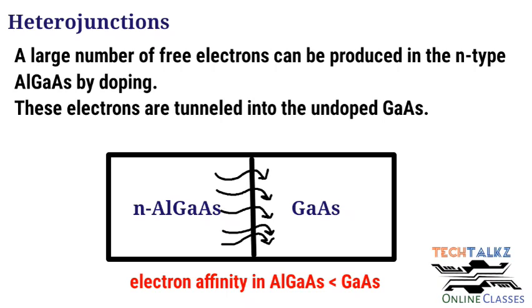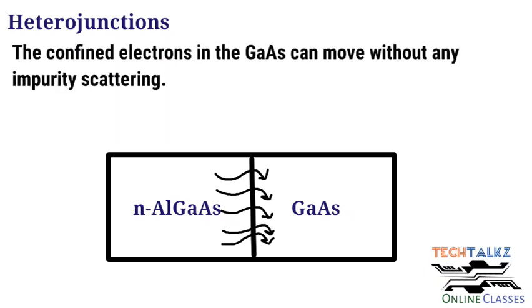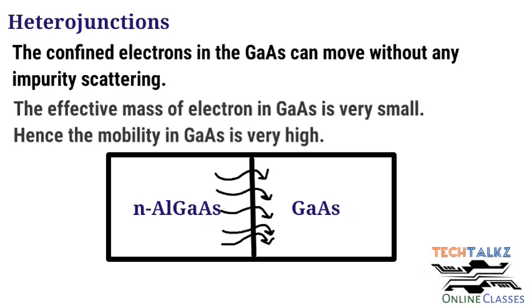Electron affinity means the energy required to excite an electron from the bottom of the conduction band into the vacuum level. The vacuum level is the energy of an electron outside the solid. So the electrons will move from AlGaAs to GaAs. When you join n-type AlGaAs and gallium arsenide, a large number of electrons will move from the wide bandgap semiconductor into the narrow bandgap semiconductor. The gallium arsenide is not doped and there will not be any impurities, so electrons can move without any scattering. The effective mass of electrons in gallium arsenide is very small compared to aluminium gallium arsenide, so the mobility of electrons will be very high in gallium arsenide.